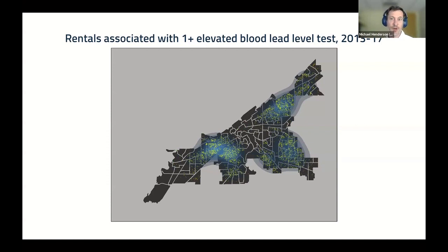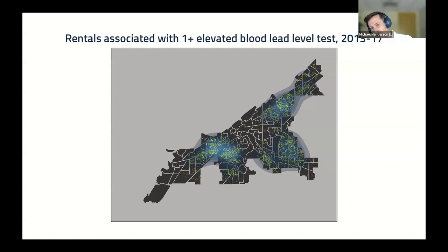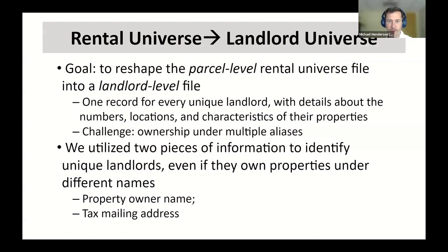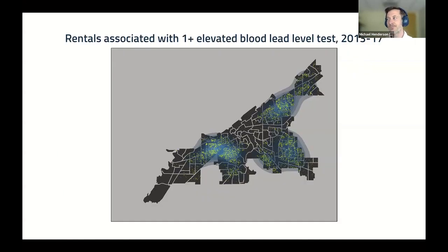These patterns closely mirror the places associated with lead poisoning events in children. The same highlighted areas on the east side of Cleveland are places that were redlined back in the 1930s and that have for decades been subject to chronic disinvestment and neglect of the housing stock.